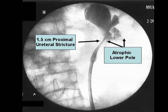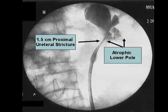Counseling the patient of his different options, which included nephrectomy, iliouretery, ureterocalycostomy, and autotransplant, the patient elected to undergo a robotic ureterocalycostomy.